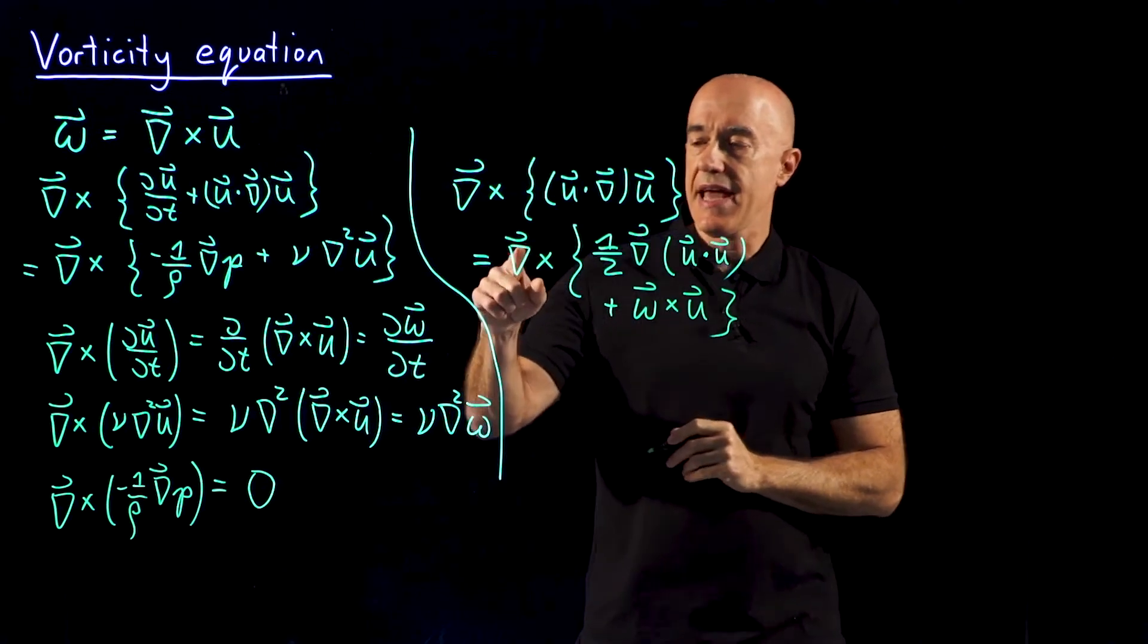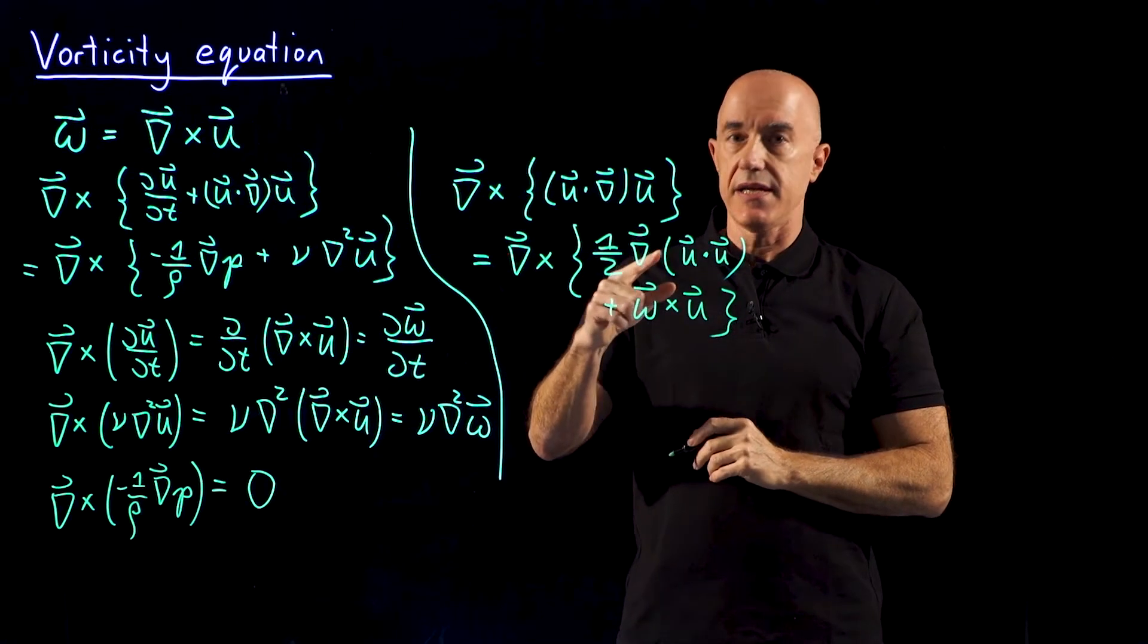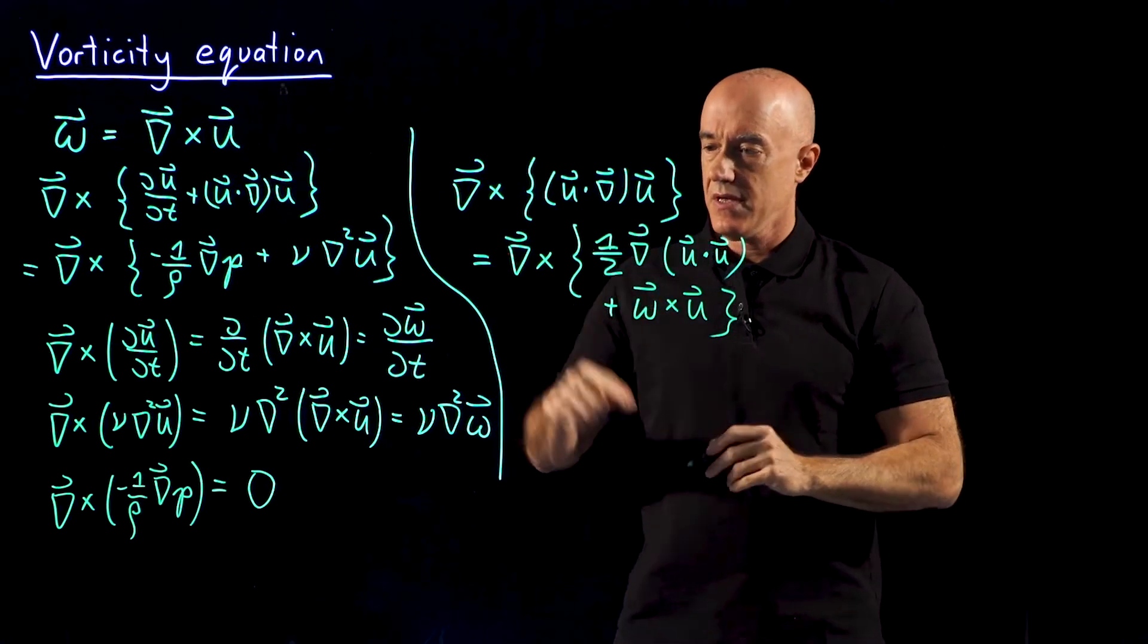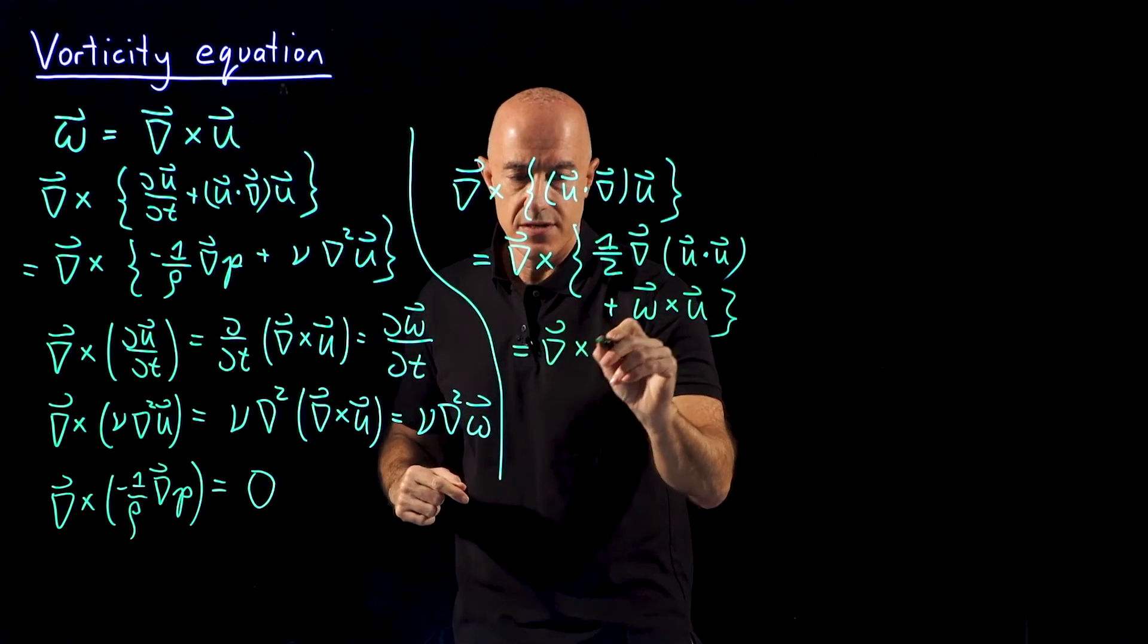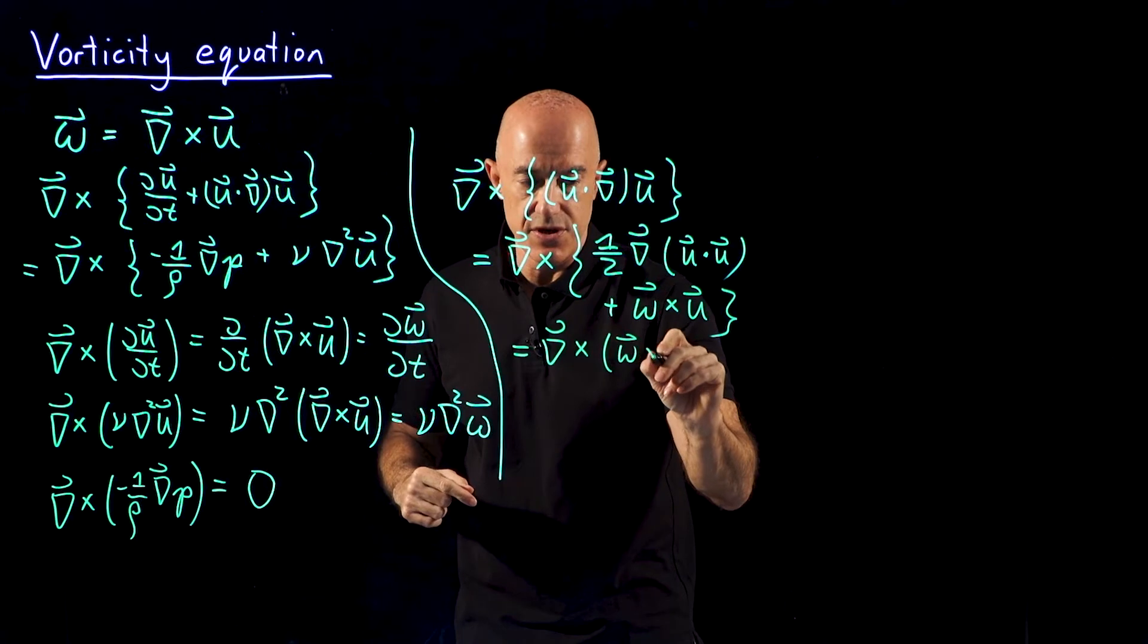And again, the curl of a gradient is 0. So this is just del cross omega cross u.